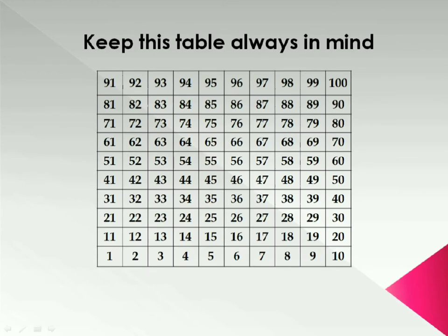For this trick you have to remember one table. The table is available on the screen. Numbers are written in left to right and in upward direction from 1 to 100. With this table we can do addition and subtraction very fast.